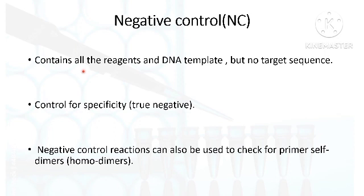Negative control again will have the master mix and DNA template, but without the target of interest. It is used basically to check for the specificity of your PCR reaction — that means to differentiate true negatives from false negatives. Negative control can also be used to check for the presence of primer dimers or homodimers.